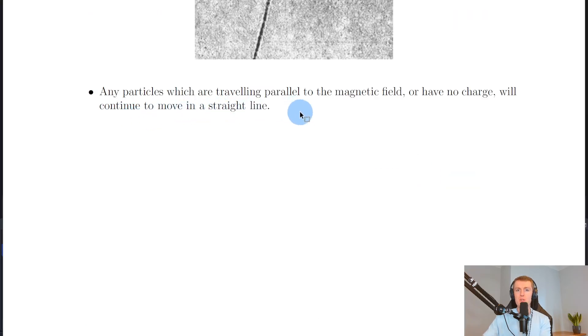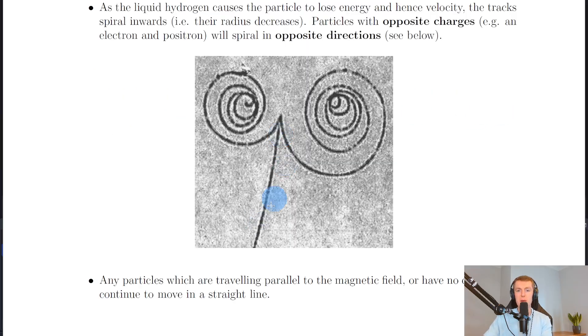Any particles which are traveling parallel to the magnetic field, or have no charge, will continue to move in a straight line. For example, if this was the path of an uncharged particle, it would just keep passing straight through the chamber.